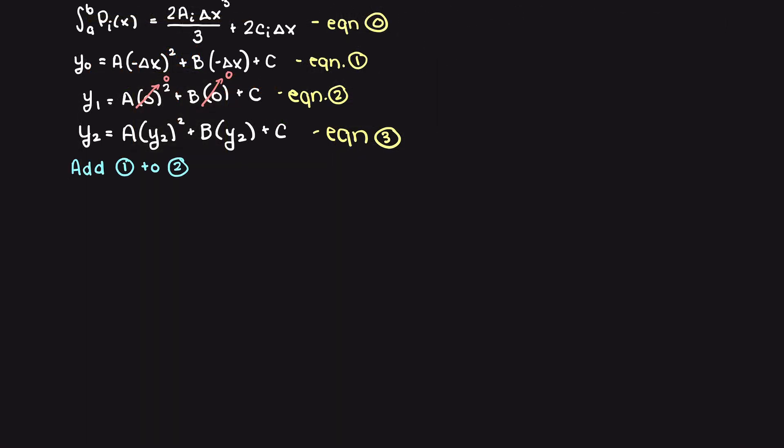Let's begin by adding together equations 1 and 2. As our b terms eliminate each other again, we are left with y0 plus y2 equals 2a times delta x squared plus 2c. Interestingly, if we look at equation 2, we have just c isolated already, and it is going to be equivalent to y1.